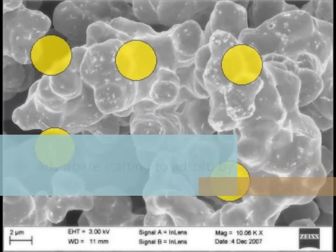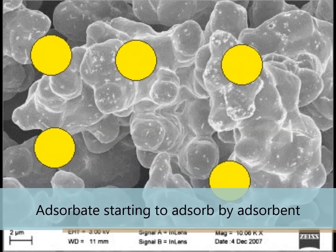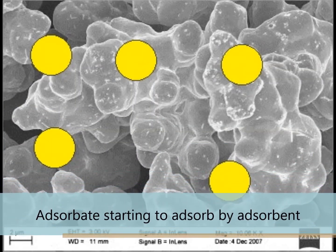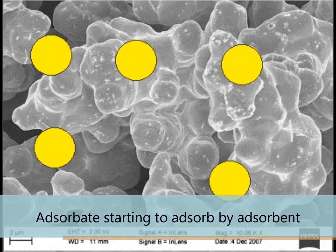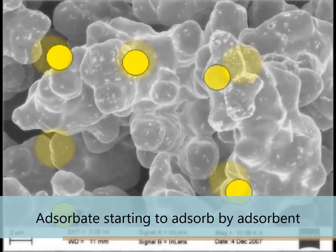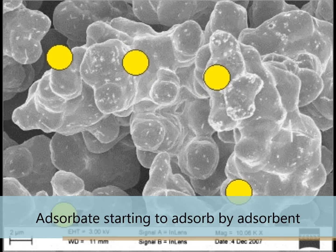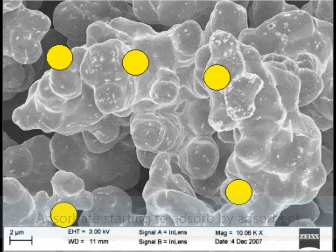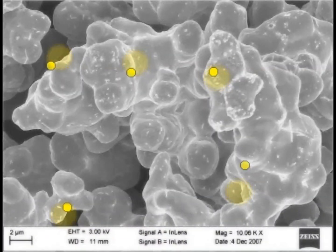The yellow spot is the adsorbate particle. When the adsorbate particle is introduced in the system, the adsorbent tends to attract the adsorbate onto its surface. When the fluid is contacted with the solid particle, not all the atoms on the surface of the adsorbent are surrounded, and it attracts the adsorbate.